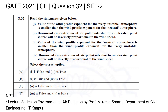This is GATE 2021 Civil Engineering question number 32. Read the statements given below — there are four statements: statement one, two, three, and four. Options are given as A, B, C, D. Among these four statements, two are true and two are false. We have to determine which ones are true and which are false.